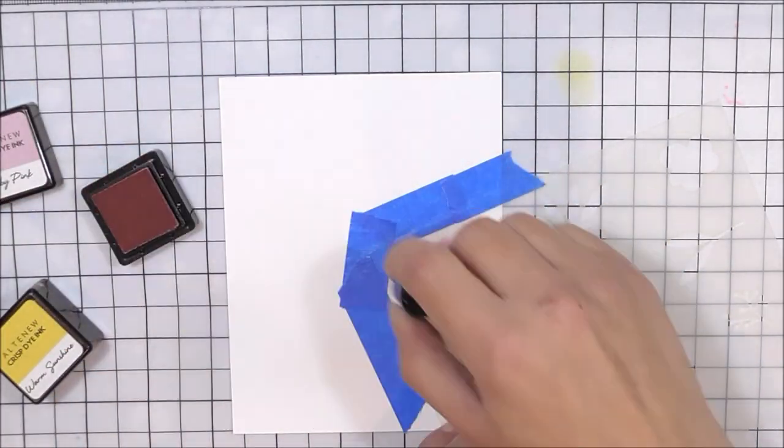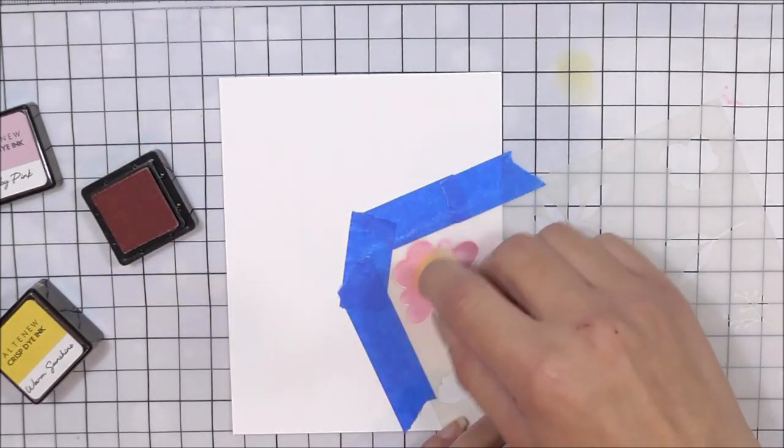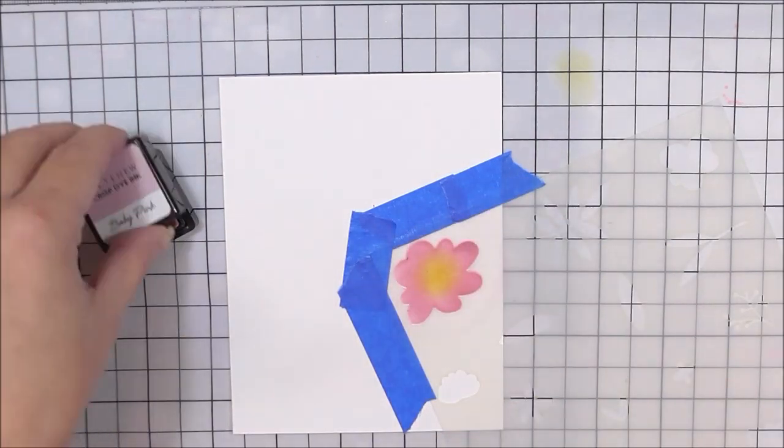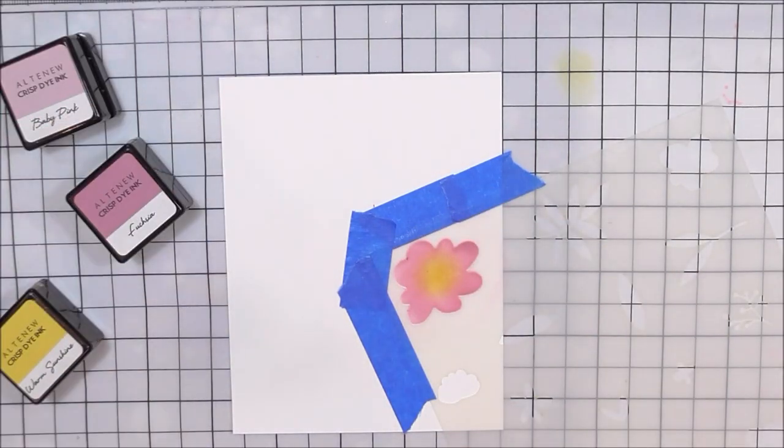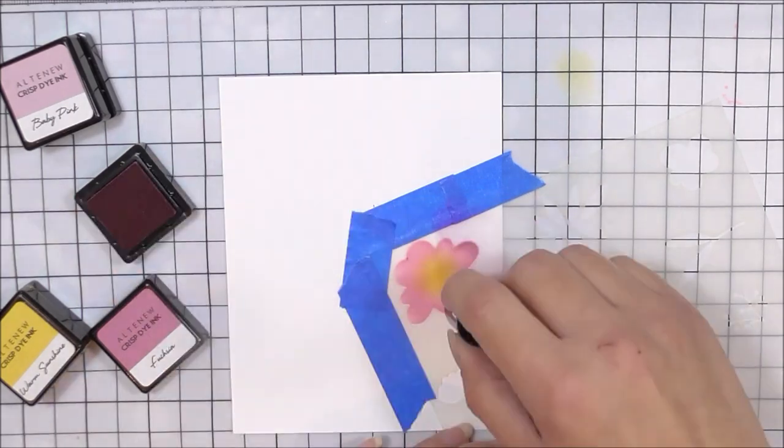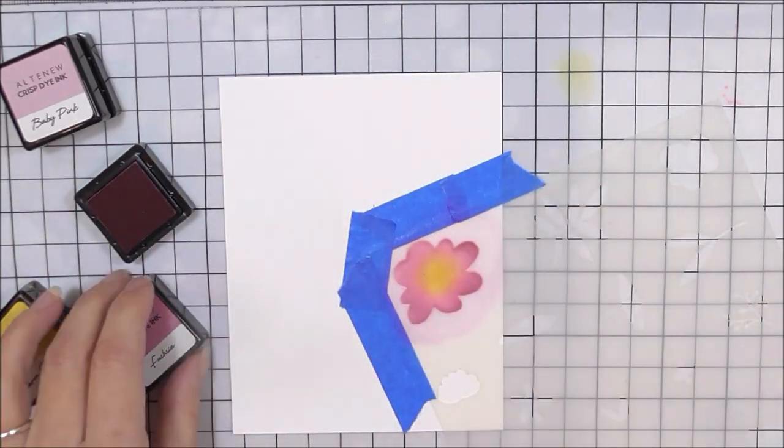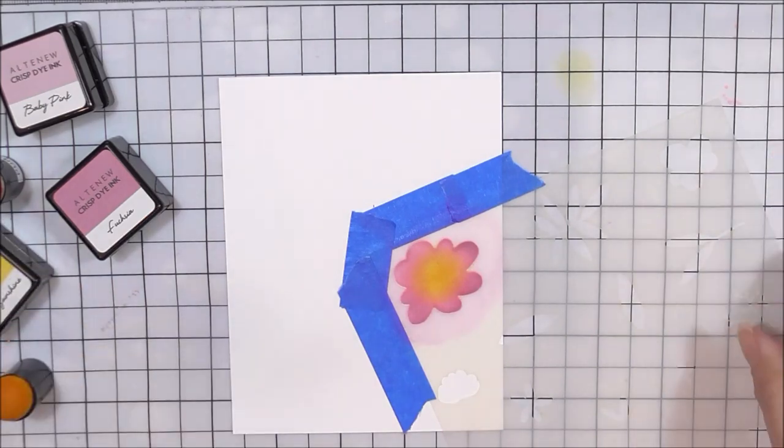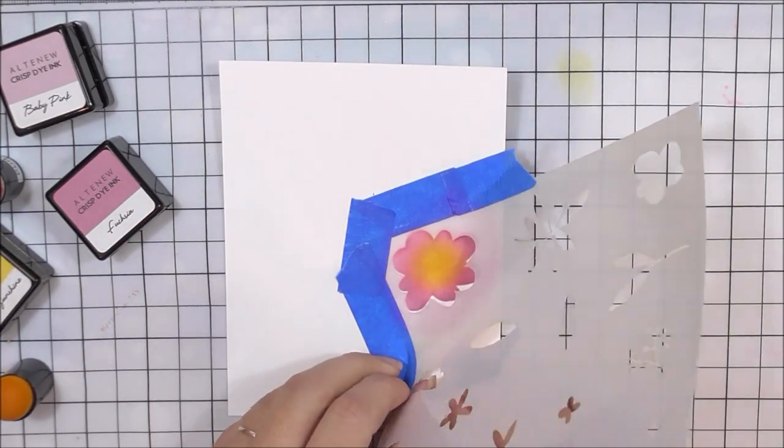For this large flower here I'm going to be using warm sunshine for the center and then baby pink around the petals, and then I'm going to darken up the outside of those petals using a little bit of the fuchsia. I'm just going to add this around again with my finger dauber and then to make sure that center really pops I'm going to add that center in again with the warm sunshine.